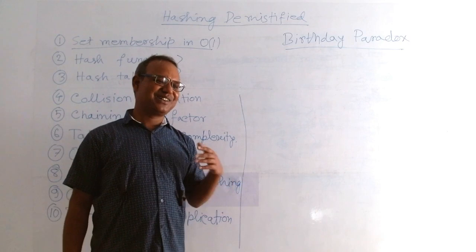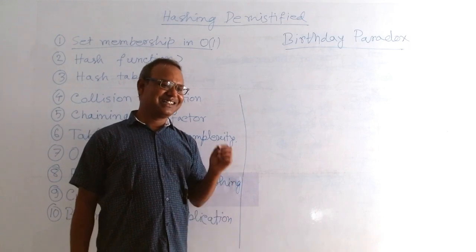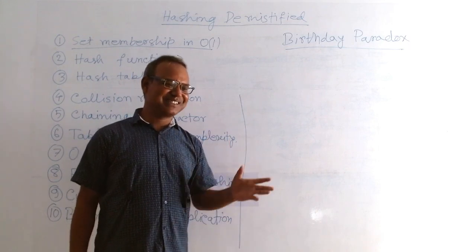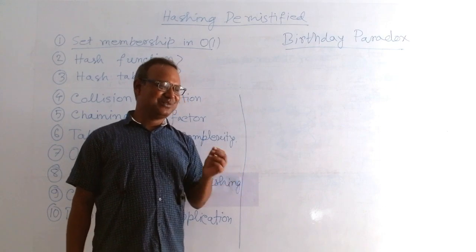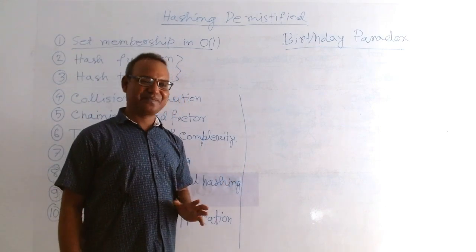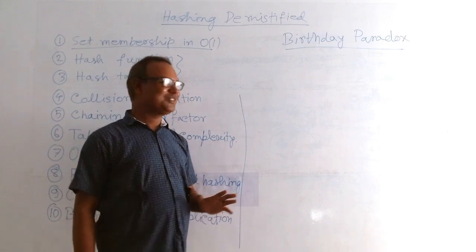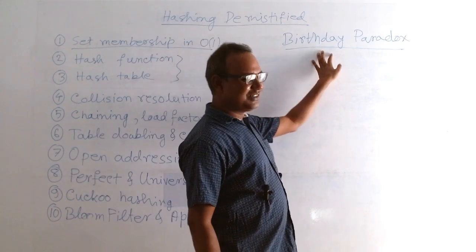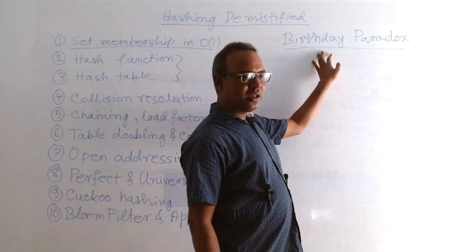And if we are taking more size of the class, let's say 80 or 90 students, then there is almost 99% probability that there will be a pair of students who share the same birthday. That is why this is called paradox.